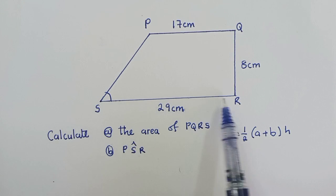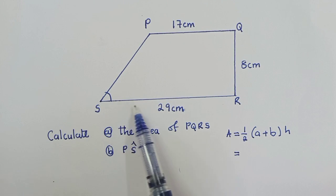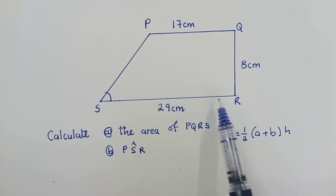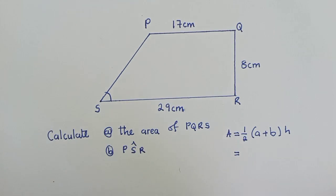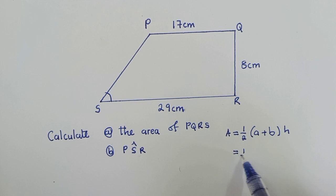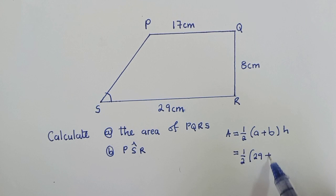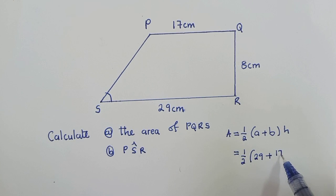So we pick one of the sides to be our A. If this is our A, the other one will be our B. If this is our A, meaning this will be our B. So we write 1/2 times A, we've got 29, plus B, 17.